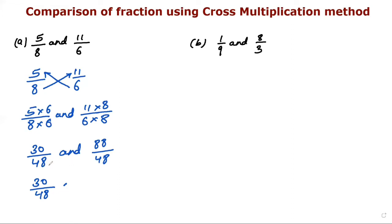And we know that in like fractions, the one with the smaller numerator is the smaller fraction. So 30/48 is less than 88/48. Therefore, 5/8 is smaller.